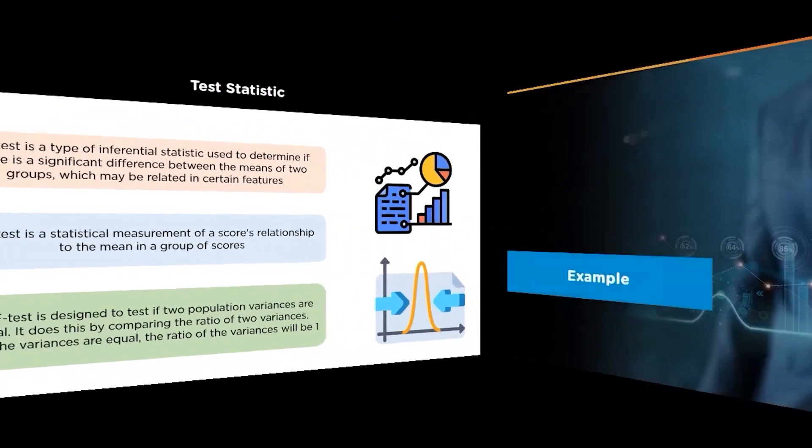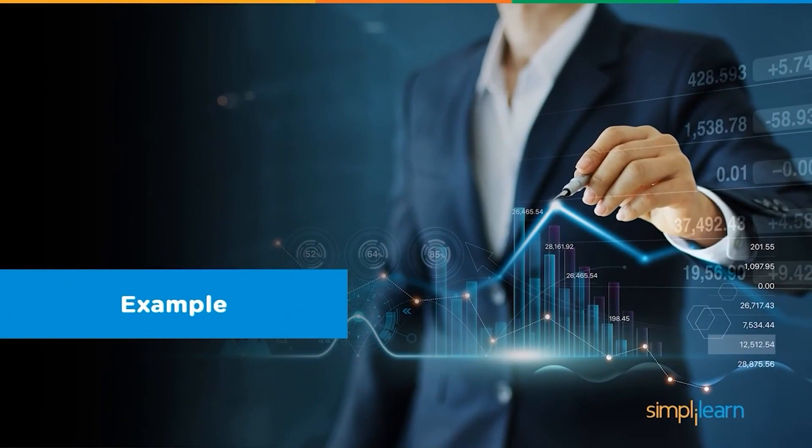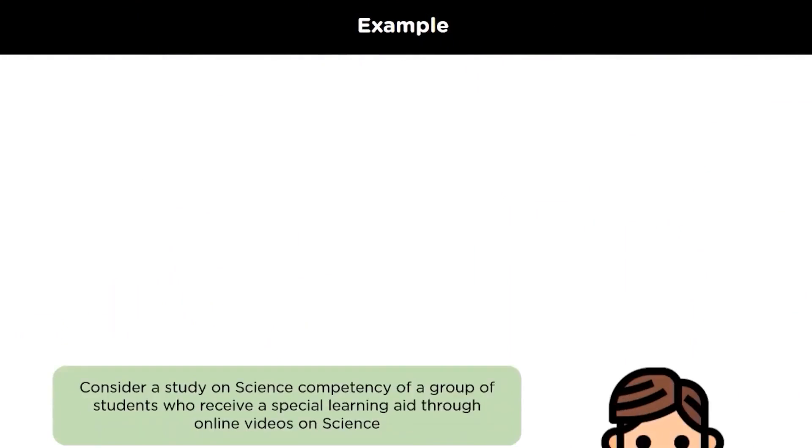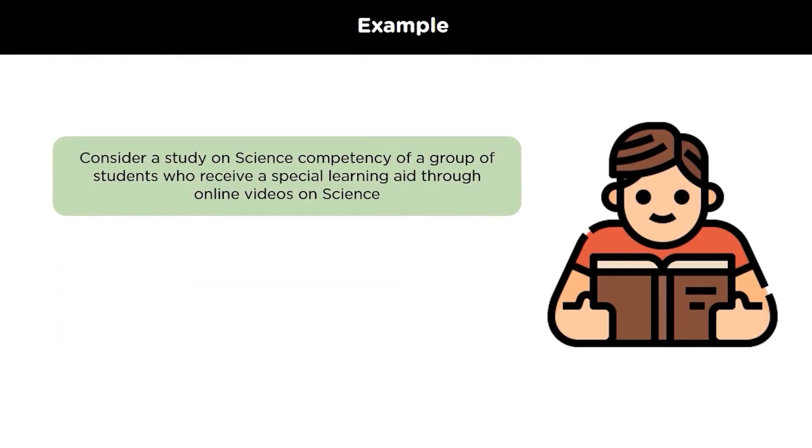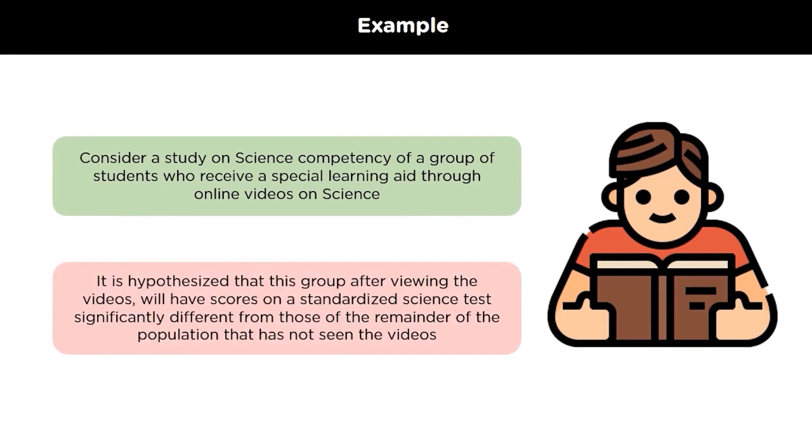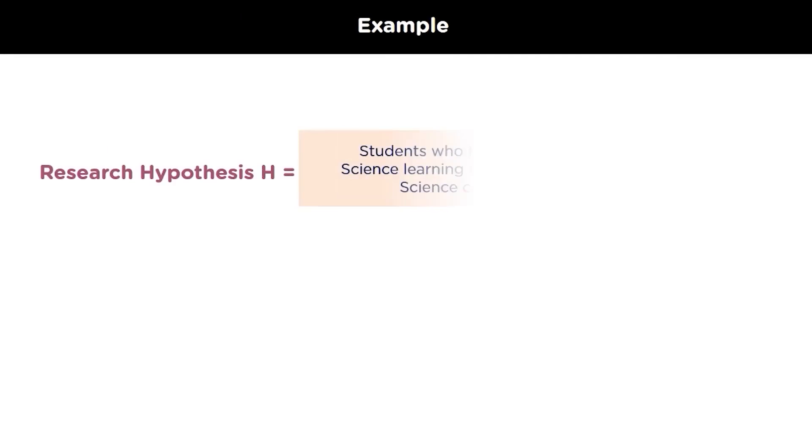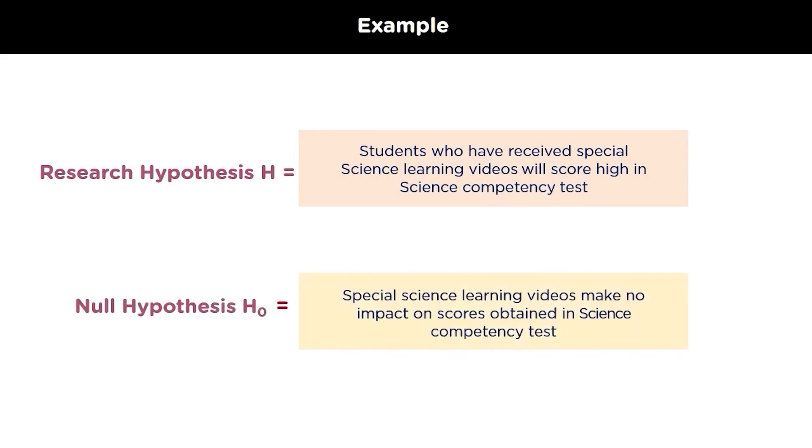Now that we have discussed all the theories related to the hypothesis testing, let's take an example to understand them more clearly. Consider a study on a group of students where the students receive a special learning aid through online videos on science. It is hypothesized that after viewing these online videos, the group of students score better than the one who have not seen the videos. So in this case, a research hypothesis will be students who have received their special science learning videos will score higher in a science competency test, and its null hypothesis will be the special science learning videos made no impact on the scores of the students.